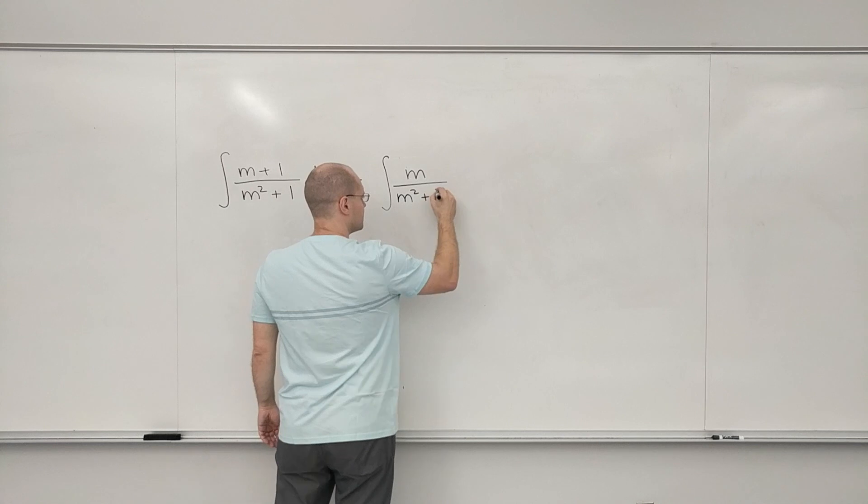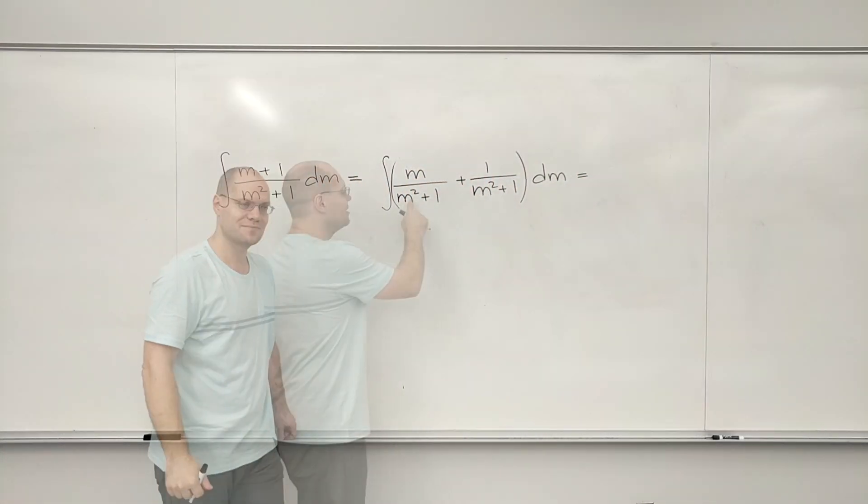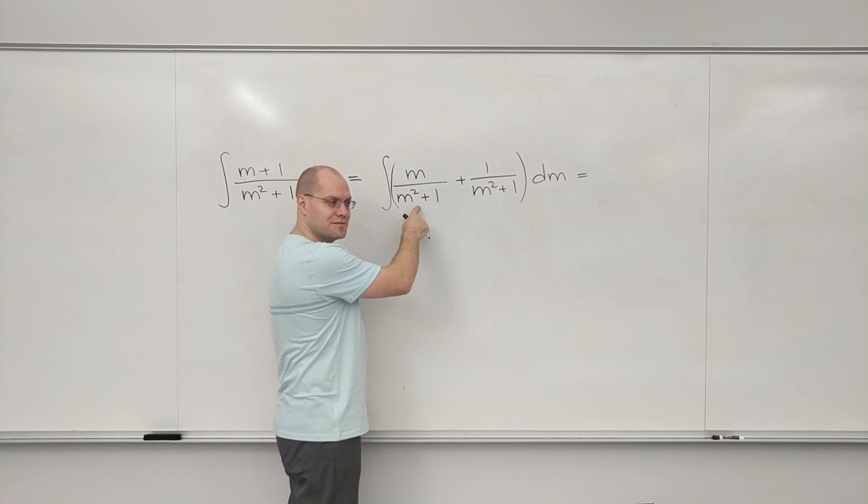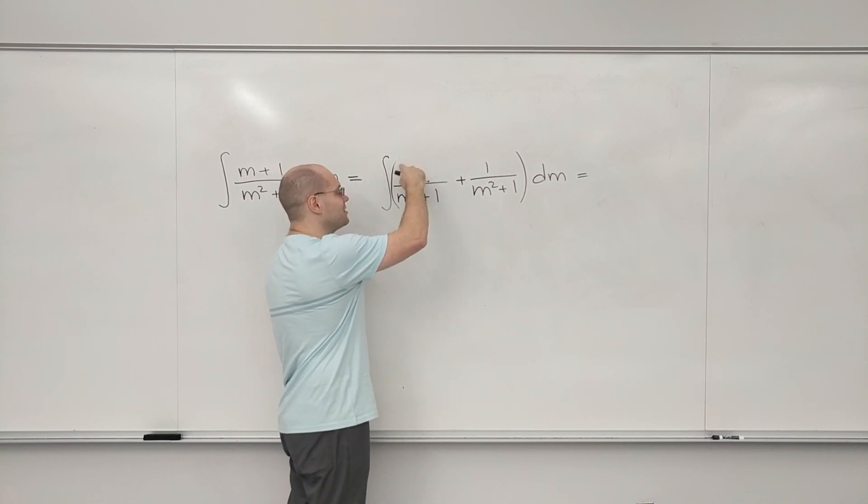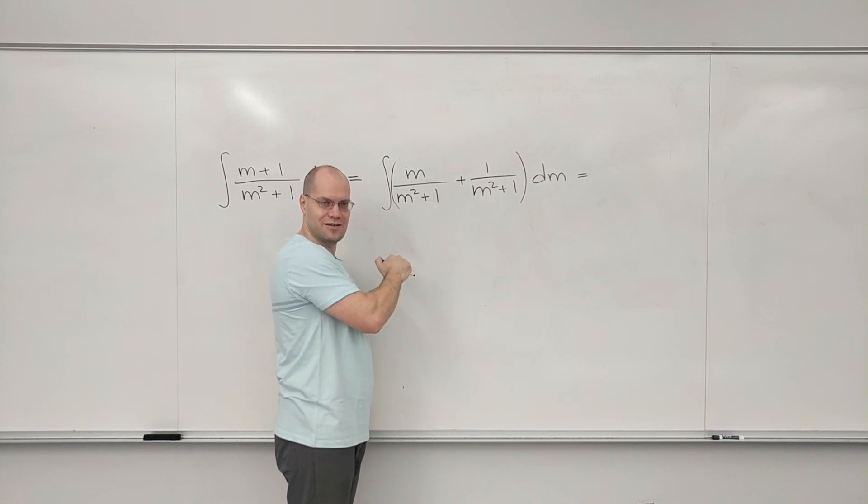And why is this helpful? Tell me. Here we have 1 over something, and then we also happen to have as a factor the derivative of that something, so that smells of natural log.